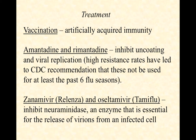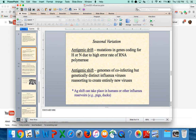Why aren't we all taking neuraminidase inhibitors? We don't want zanamivir and oseltamivir to go the way of amantadine and rimantadine, where resistance rates are so high the drugs are unreliable. If we can limit these drugs to high-risk groups rather than overuse them, we can hopefully slow the onset of resistance and maintain their effectiveness for as long as possible.